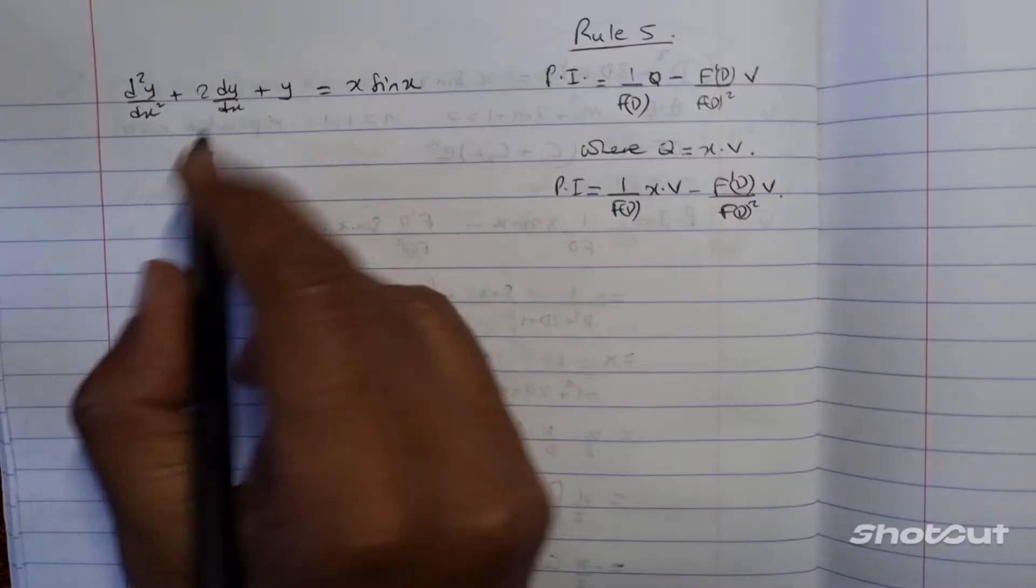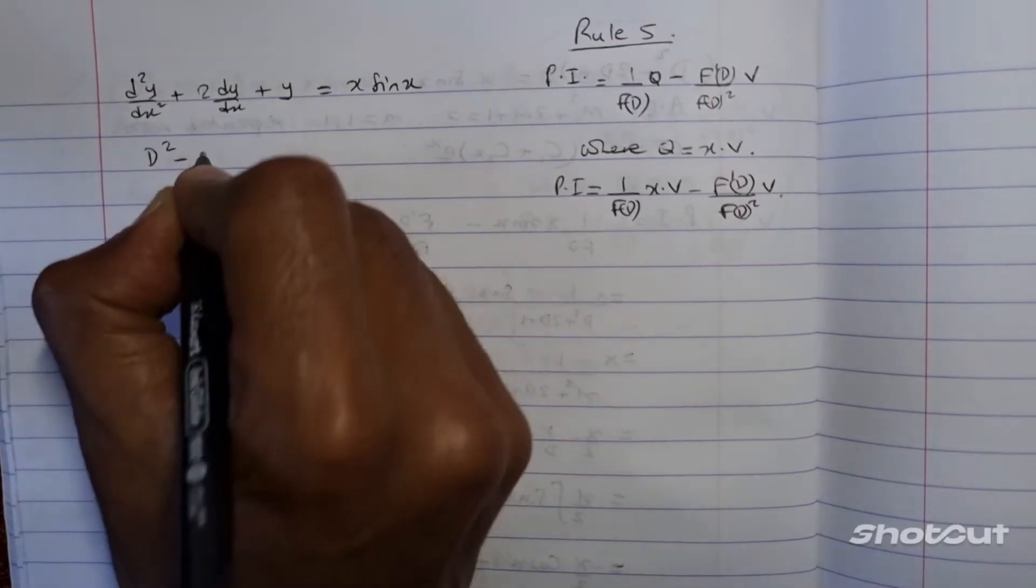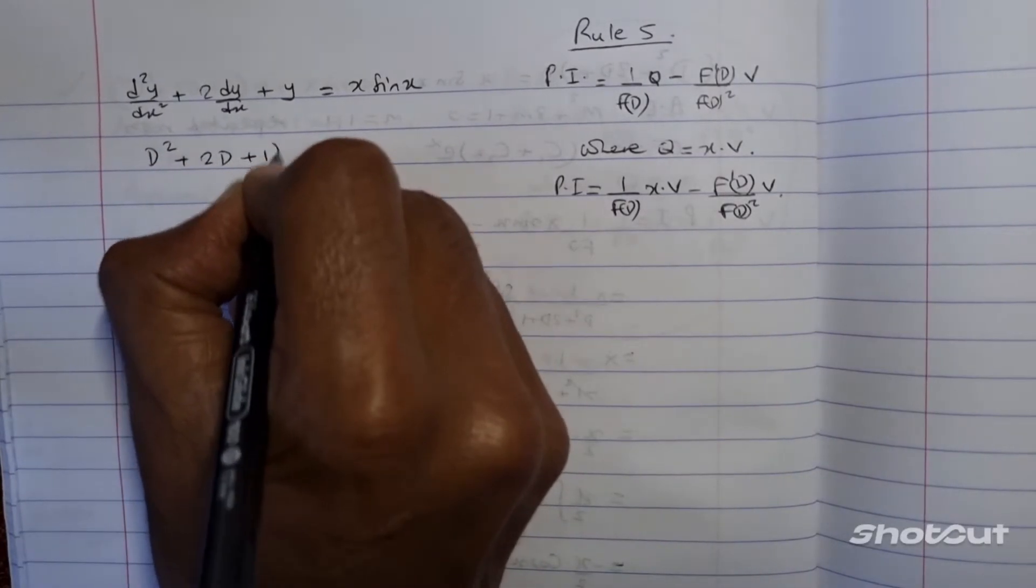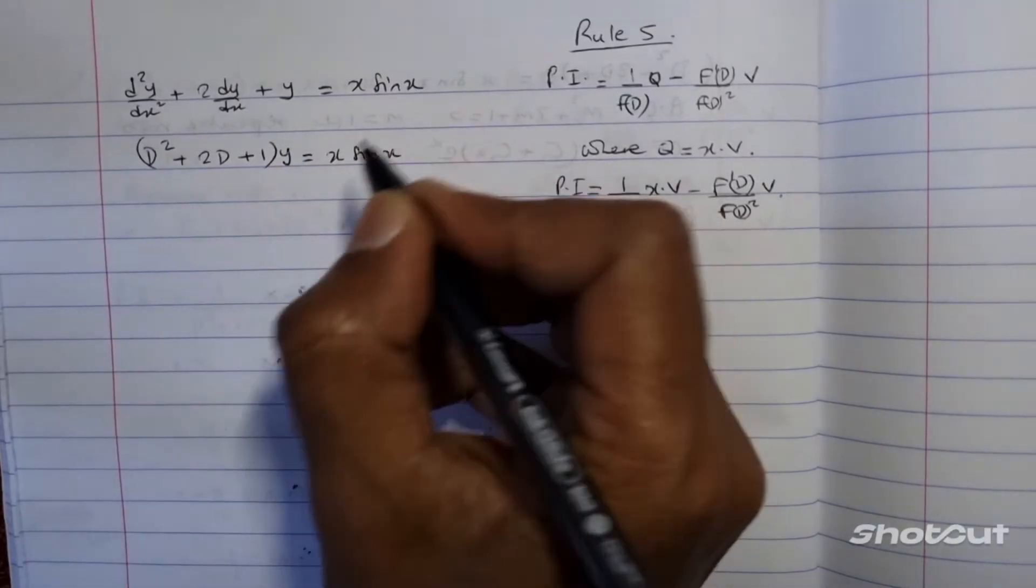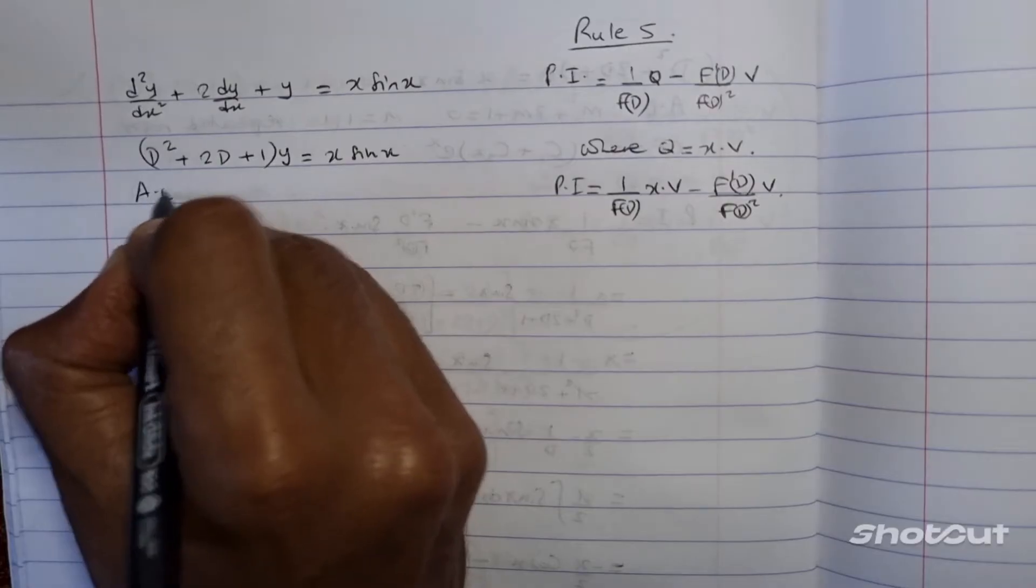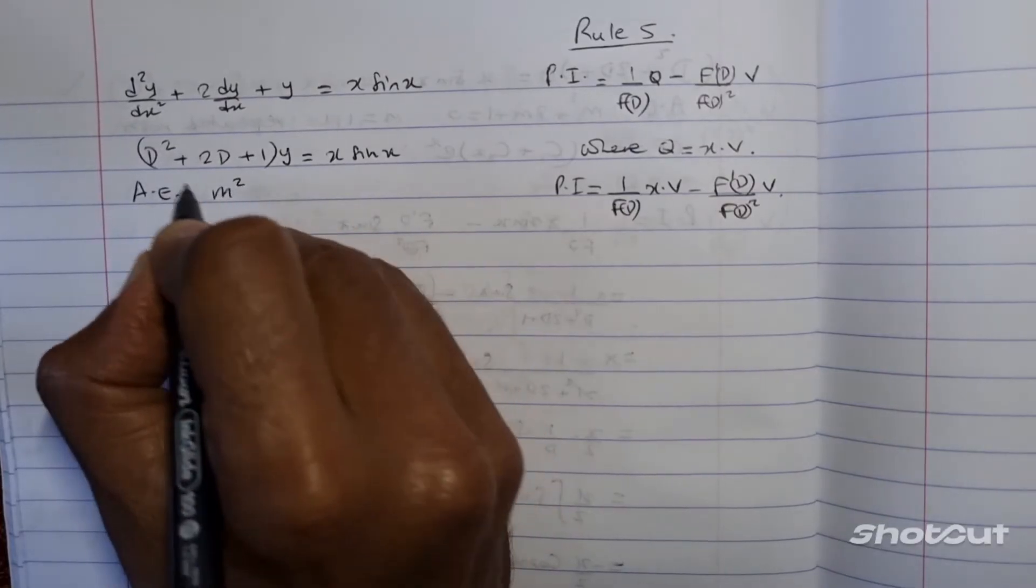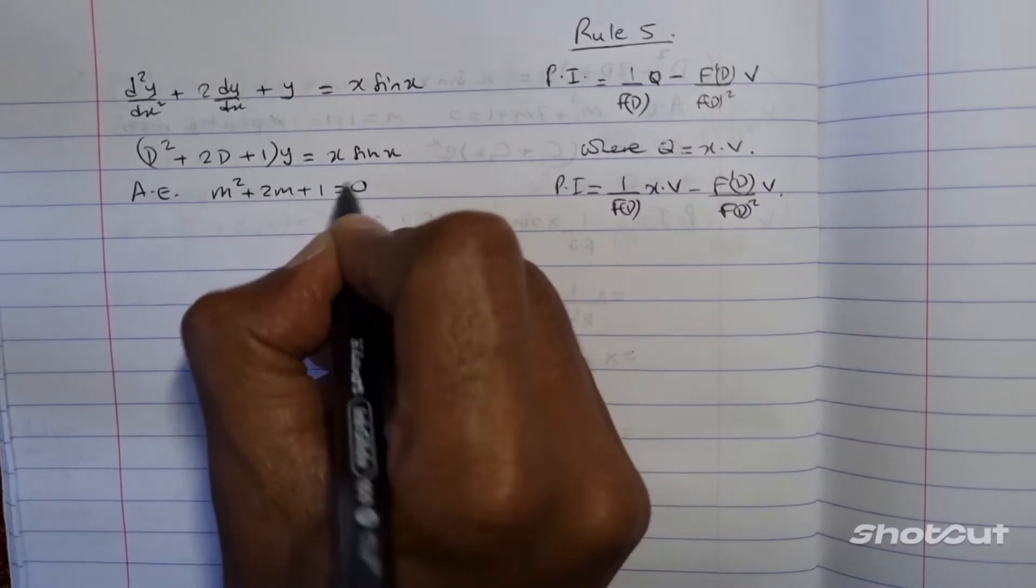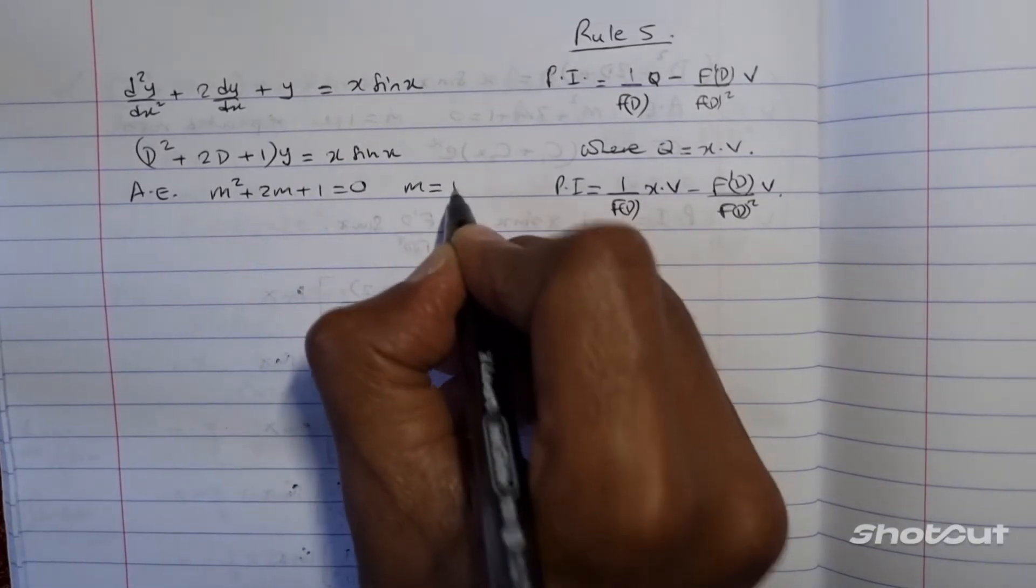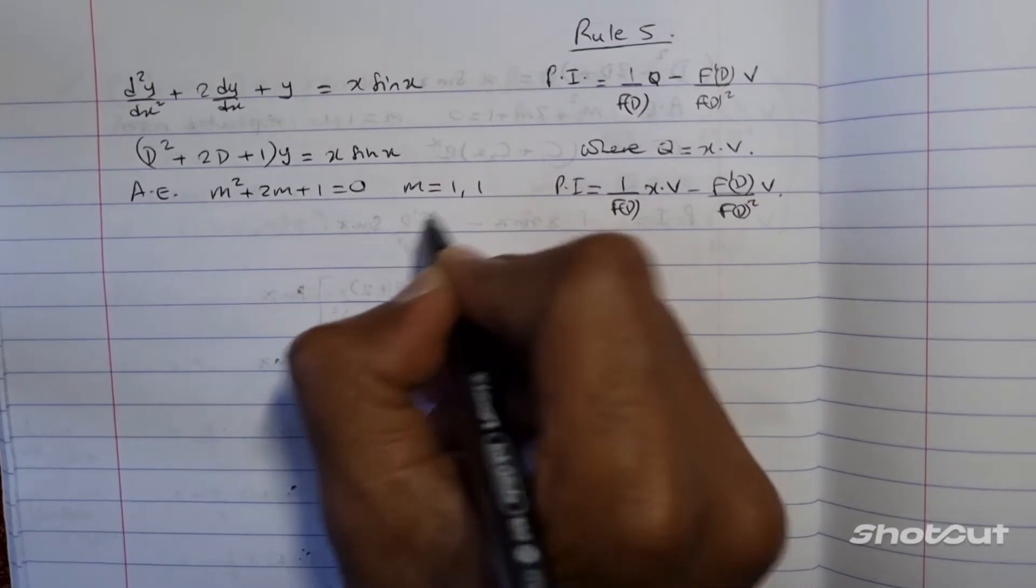Okay, so first of all, let me just write it as d squared plus 2d plus 1 into y is equal to x sine of x, where I can pull the auxiliary equation as m squared plus 2m plus 1 is equal to 0. And solving this, you're going to get repeated roots.